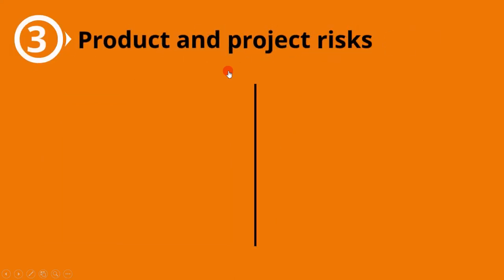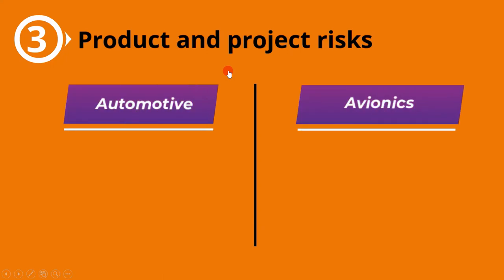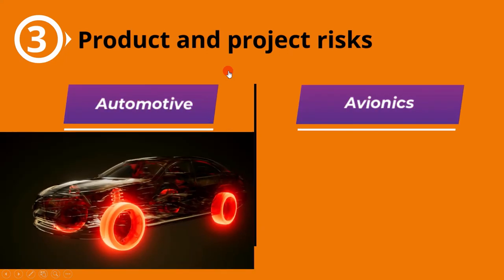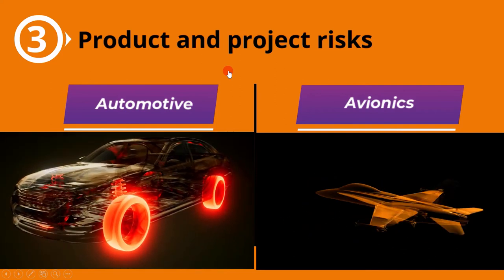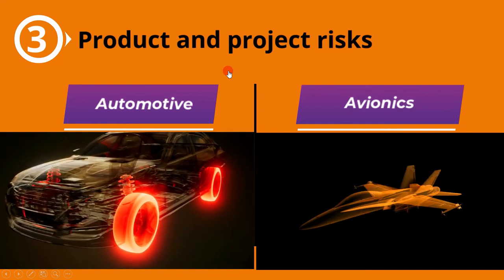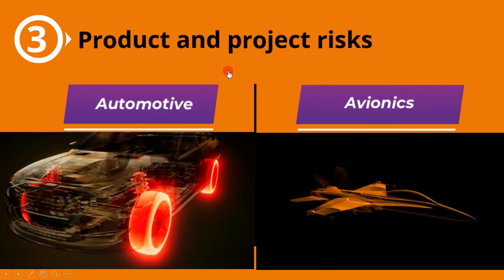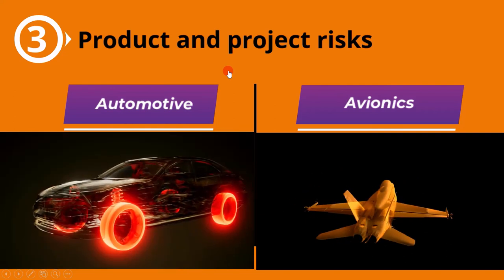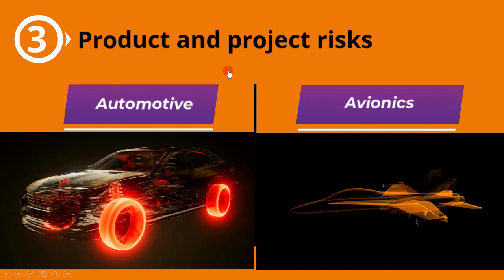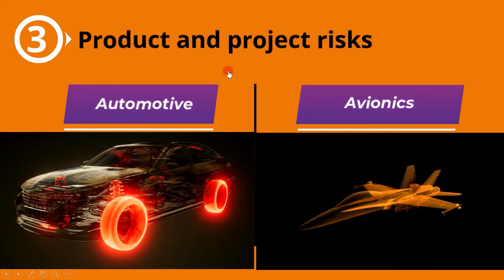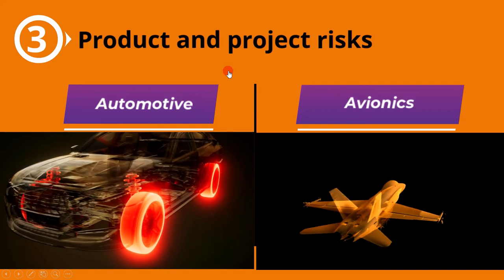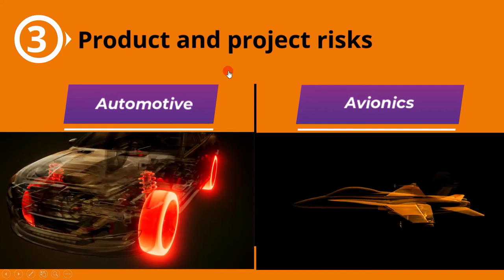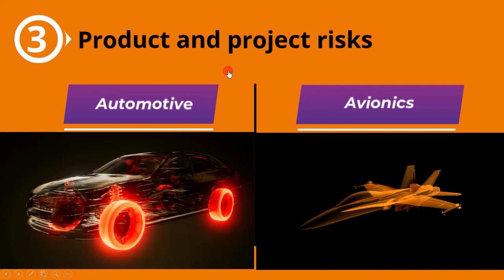The third context is product and project risk. Let's take an example of two different products: automotive and avionics. By looking at the project, you can determine which has more risk — avionics products contain more risk than automotive. Therefore, the test process will be more rigorous for a product with more risk.